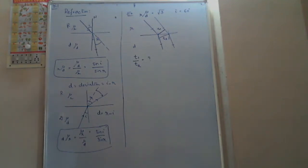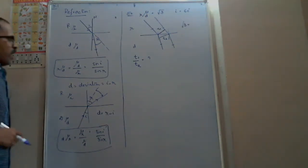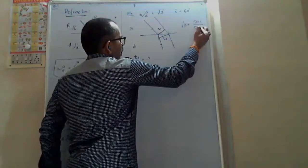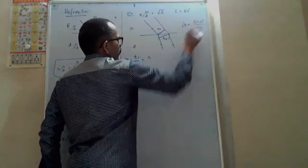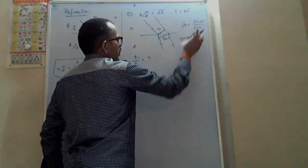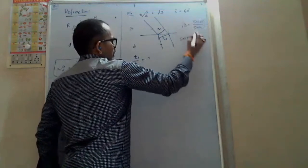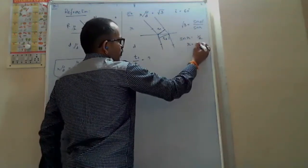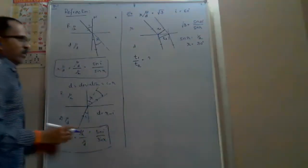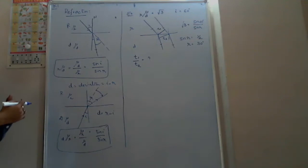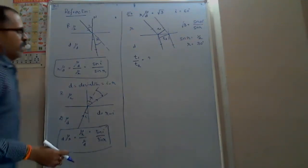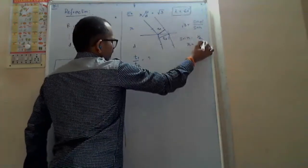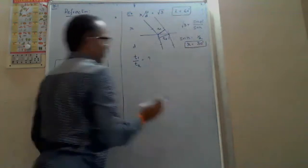Using Snell's law: mu equals sine i by sine r, with i equal to 60 degrees. Sine r equals 1 by 2, so r equals 30 degrees. Now using the given information i equals 60 degrees and r equals 30 degrees, consider the geometry. What is this angle here in the right-angle triangle?